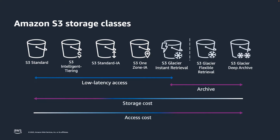Amazon S3 offers a range of storage classes that you can choose from based on the data access, resiliency, and cost requirements of your workloads. S3 Standard is often the best option for active workloads as there are no incremental charges for data retrievals. For workloads that are less active, the infrequent access storage classes offer data storage cost savings compared to the S3 Standard storage class. This cost savings does come with a tradeoff in the form of a per-gigabyte retrieval charge when data is accessed.